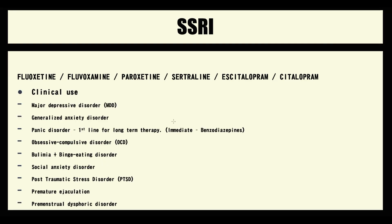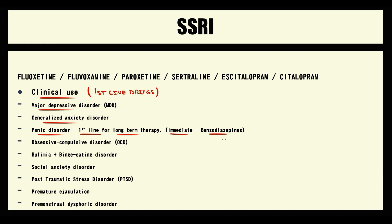Selective serotonin reuptake inhibitors are considered first-line drugs for any condition where we can use them: major depressive disorder, generalized anxiety disorder, and panic disorder. For panic disorder, SSRIs are used for long-term therapy, but acutely, once a panic attack occurs, we use benzodiazepines. SSRIs are also used for obsessive-compulsive disorder, social anxiety disorder, post-traumatic stress disorder, premature ejaculation, and premenstrual dysphoric disorder.